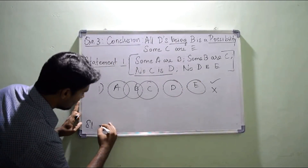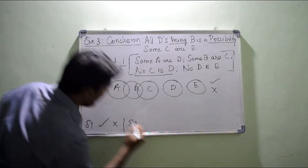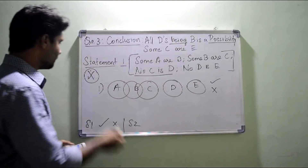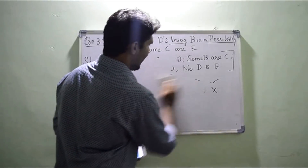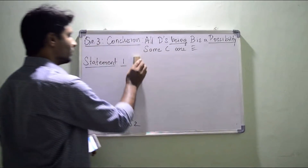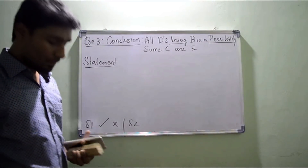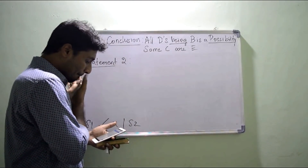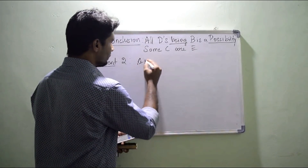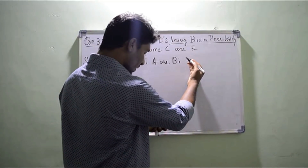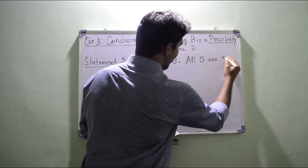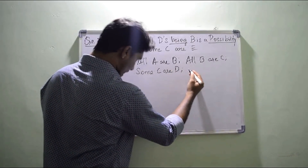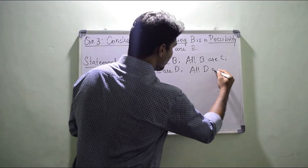So statement one conclusion one is getting true and conclusion two is getting false, giving us true and false. Now we go for statement two. Again, there are four phrases under a single statement — statement two. Please always remember: if you are getting more than two or three statements, don't go for any possibility — one diagram is more than sufficient. Statement two states: all A or B (first phrase), all B or C (second phrase), some C or D (third phrase), and all D or E (fourth phrase).